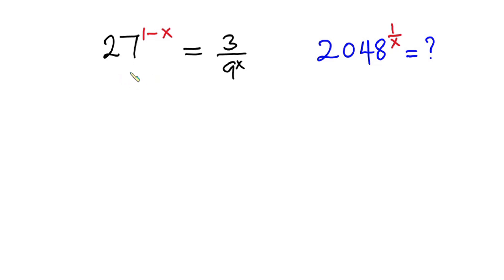Hello everyone, in this video we will solve this nice SAT math multiple choice problem. We have 27 to the power 1 minus x equals 3 divided by 9 to the power x, and we have to find the value of 2048 to the power 1 over x.